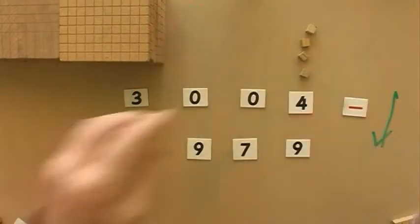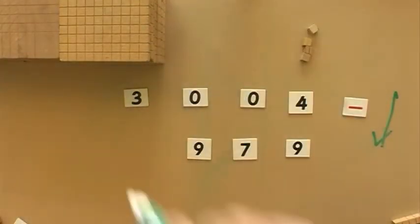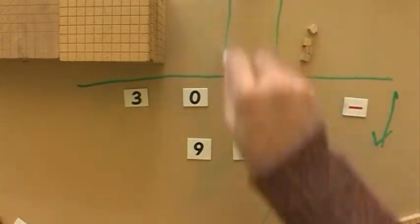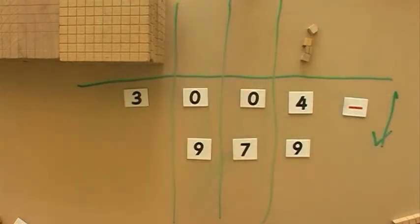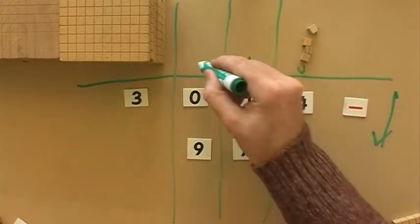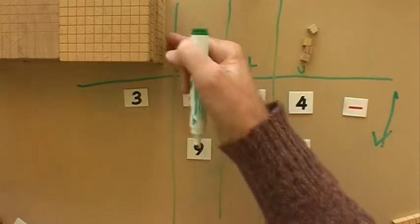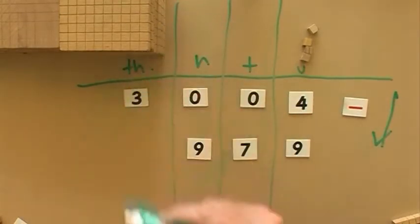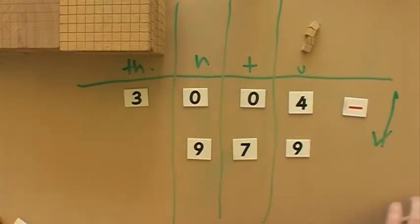Let's put in the place value chart. The place value chart helps us to be neat and have all our columns lined neatly up. So we have the units, the tens, the hundreds, and the big thousands. Three thousand and four. So we're going to go do our trading, borrowing, carrying, decomposition, whatever you want to call it. We're going to do that now.